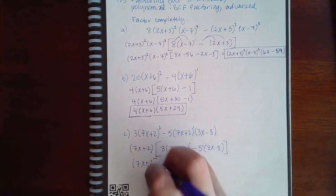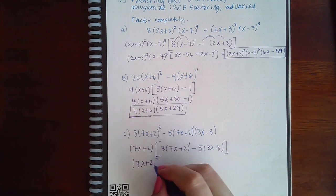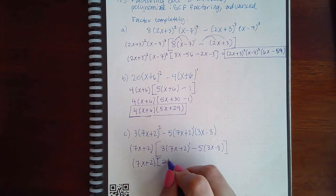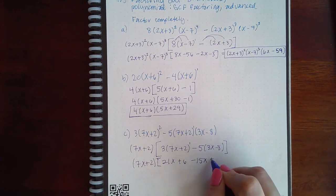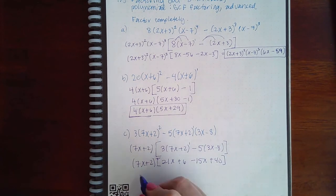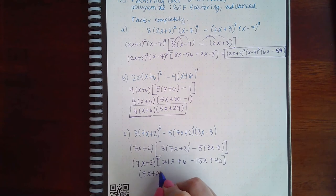So if I simplify that inside the brackets, I end up with 21x plus 6 minus 15x plus 40.